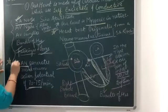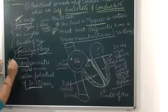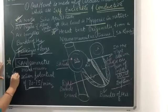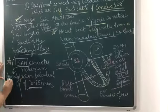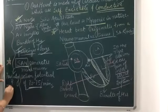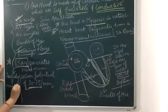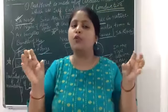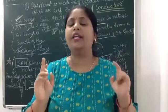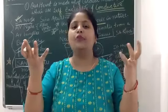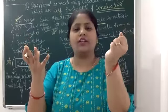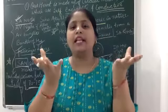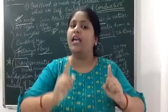The sino-atrial node is also responsible for initiating and maintaining rhythmic contraction. One heartbeat consists of one systole and one diastole — systole is the contraction and diastole is the relaxation. So one heartbeat is one systole and one diastole, and there are 70 to 75 of these rhythmic contractions per minute.